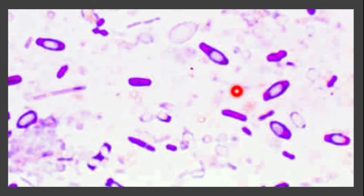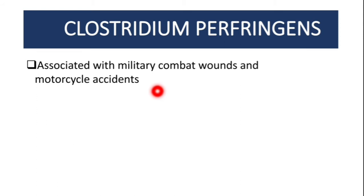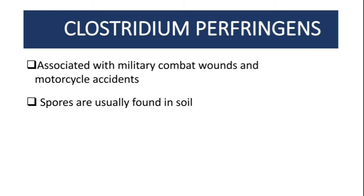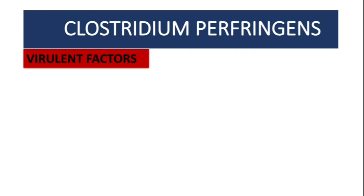As you can see, this is how it looks like under the microscope. Clostridium perfringens is usually associated with military combat wounds and motorcycle accidents. What is common between these two? They both involve flesh wounds, and these flesh wounds will be in contact with soil, because spores are usually found in the soil.